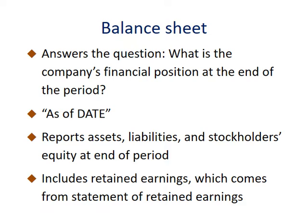The balance sheet answers the question of what is the company's financial position at the end of the period. We will see the balances of the assets the company owns, what it owes, and the company's equity. The balance sheet is the only statement that is as of one particular date — it lists the balances of assets, liabilities, and equity accounts at the end of the period. The ending balance of retained earnings flows from the statement of retained earnings to the balance sheet.